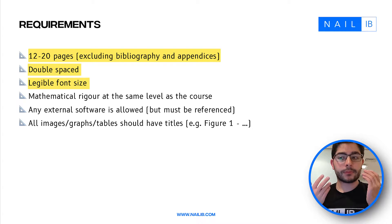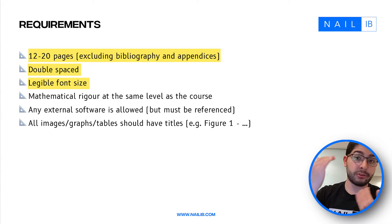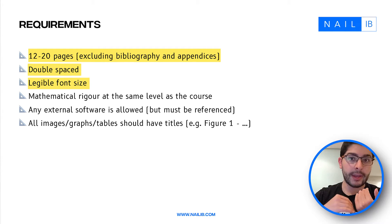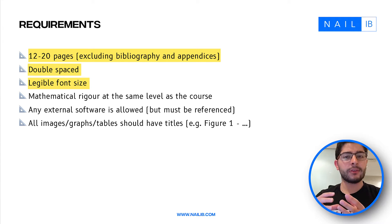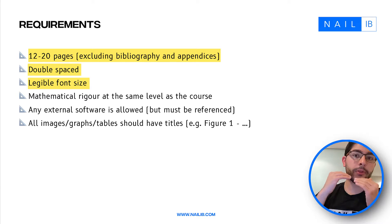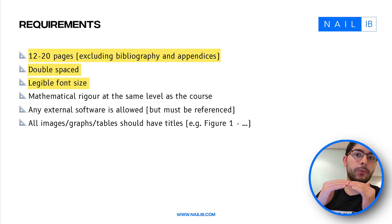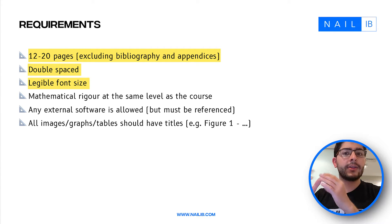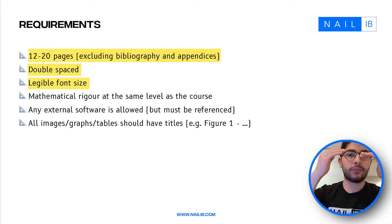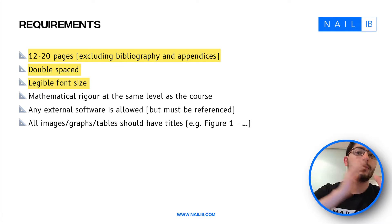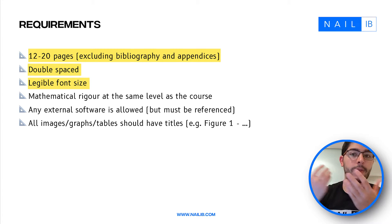In terms of whether there's a difference between SL and HL, or AA and AI, the main difference is that the level of mathematics you include should match the level you're studying. So if you're doing SL maths your IA should mostly include SL maths, and if you're doing HL maths you'd be including mathematics from the HL course.